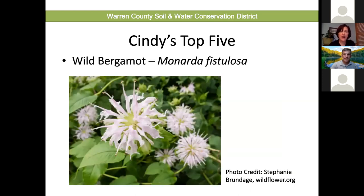Another of my top five is wild bergamot, Monarda fistulosa. It needs good drainage, likes dry to moist soil, and sun to part shade. It attracts bees galore—bumblebees love this and really get on those flowers. Native bees and hummingbirds are also attracted to it. It's just a great plant to have around. One caution: if you can't get it in a location where it can dry out somewhat, you may have mildew problems with this plant.